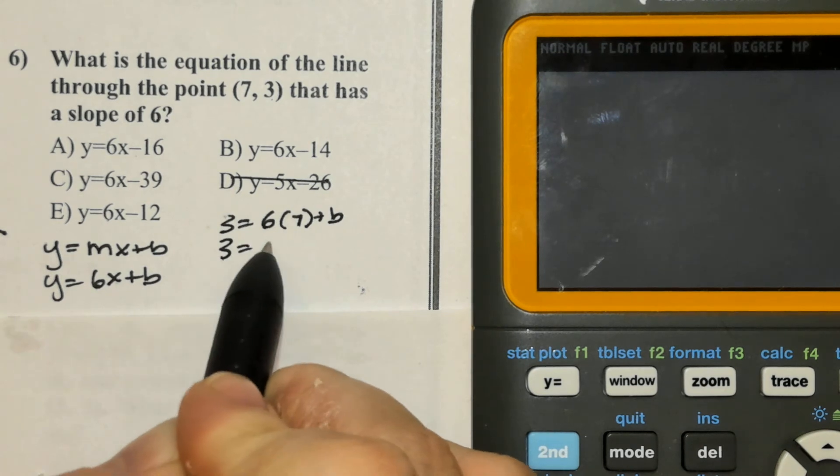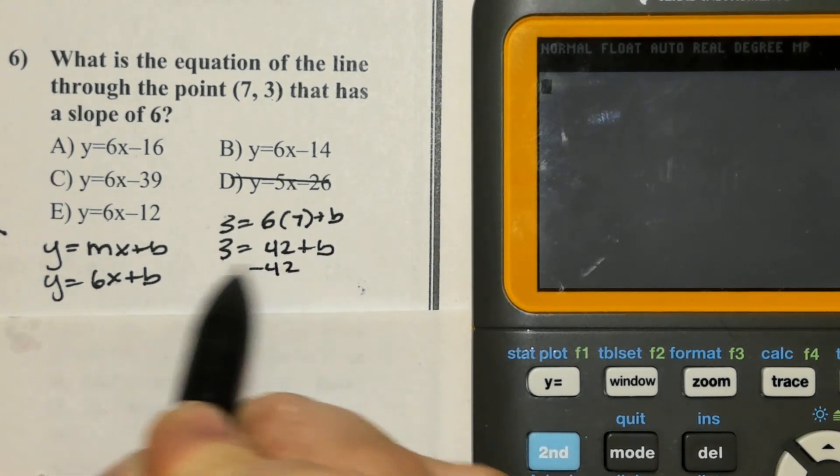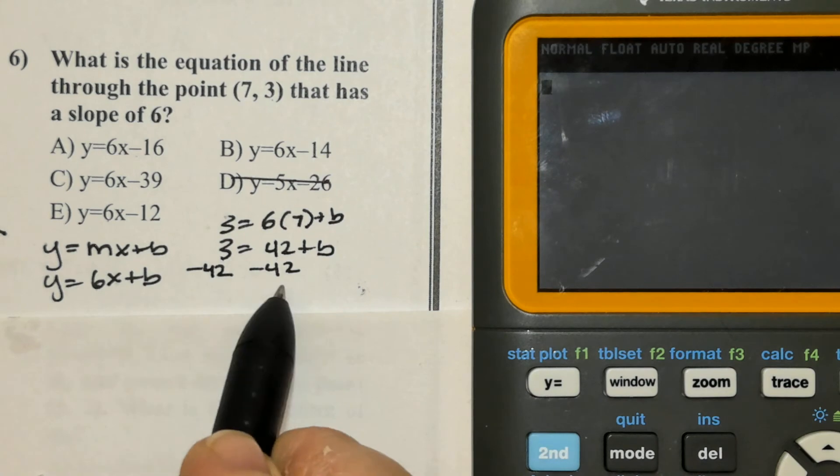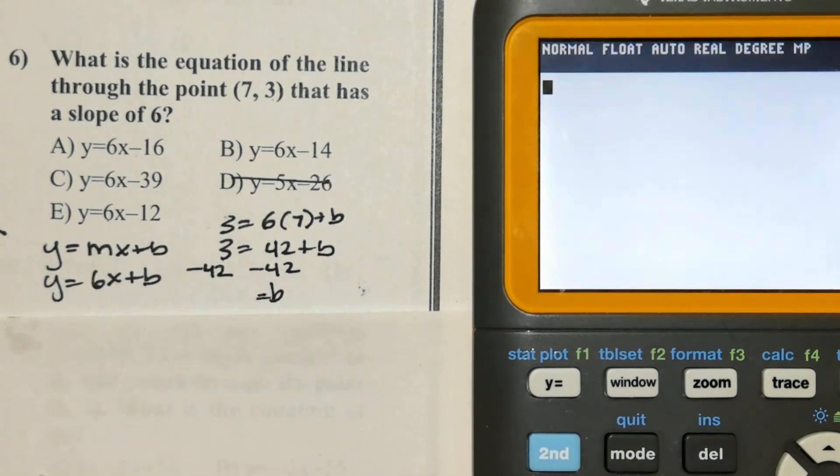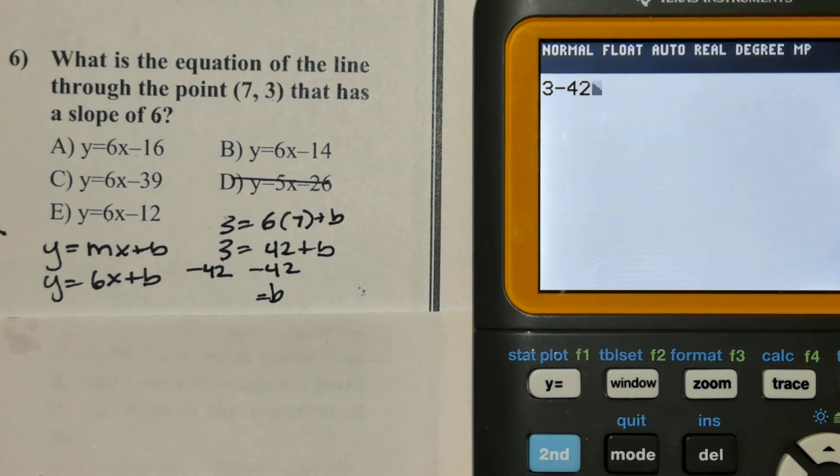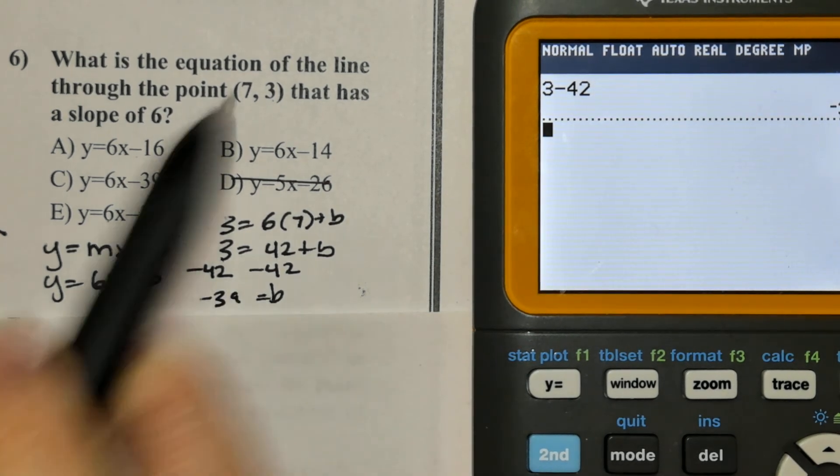3 equals 42 plus b. Subtract 42 from both sides. And b equals, again, choose to use your calculator or do mental math. 3 subtract 42 is negative 39. And that's your b.